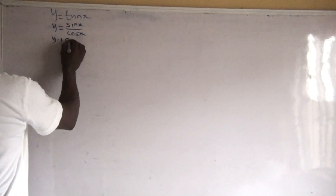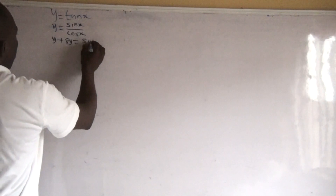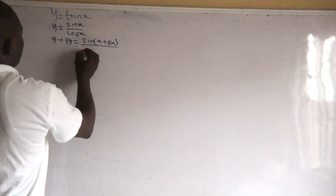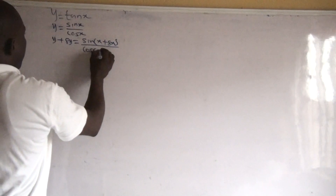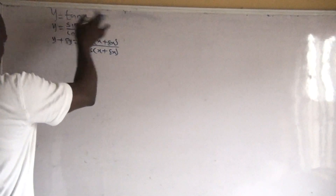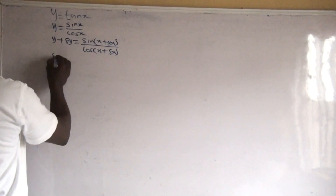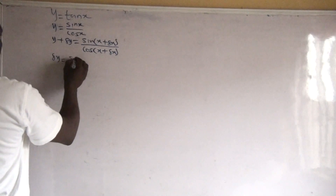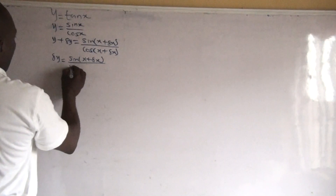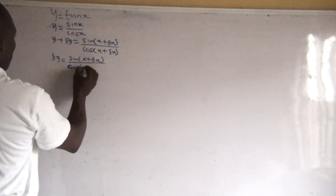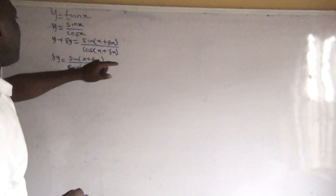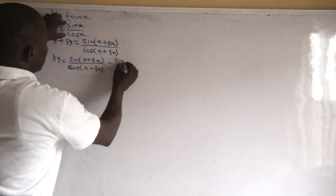So delta y becomes sin(x + Δx) over cos(x + Δx), and we move y to the right hand side. So delta y equals sin(x + Δx) over cos(x + Δx) minus y, where y is simply sin x over cos x.